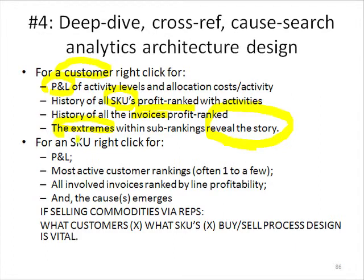It's similar also for stock-keeping units. We can take a super profitable or unprofitable SKU, get a P&L, then look at most active or customer rankings. Often, super profitable or super unprofitable items could actually have just one or two customers that are buying it — a special item that's massively profitable or massively unprofitable. Look at all the invoices and what will happen again is the answer emerges.